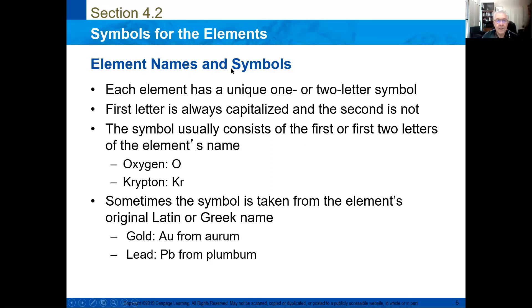The names of the elements and the symbols. Each element has a unique one or two letter symbol. The first letter is always in the capital case. The second one is lowercase. The symbol usually consists of the first or the first two letters of the element. For example, oxygen is represented by O. Krypton is represented by Kr. Sometimes the symbol is taken from the elements original Latin or Greek name. For example, gold is Au from this name that comes from Latin. Or lead is taken from this name, plumbum. That's why it is Pb, and it doesn't have to be with the name in English.